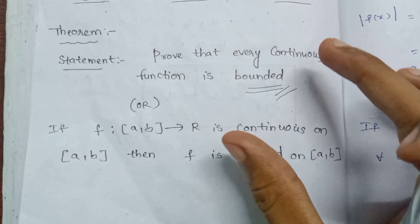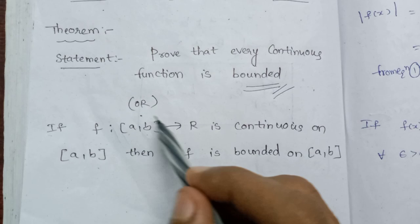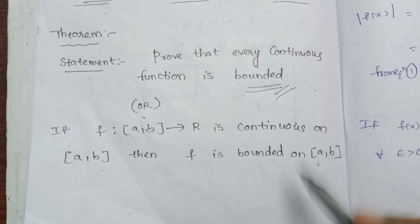If it is bounded, we have a finite value. This function is bounded. If f from [a, b] to R is continuous on [a, b], then f is bounded on [a, b].